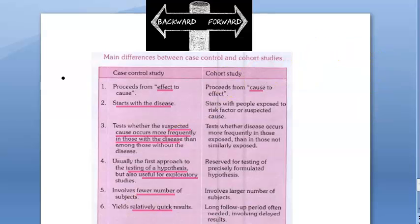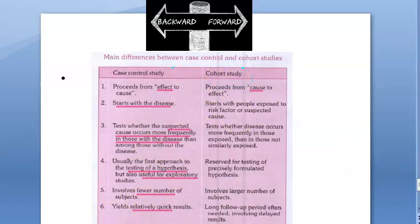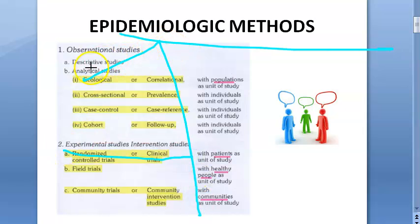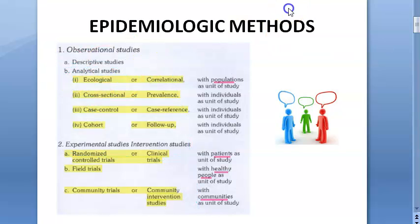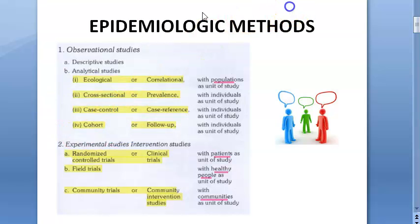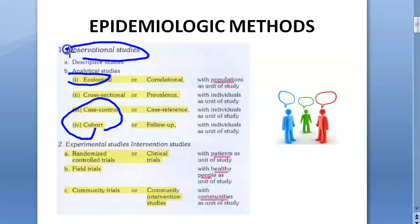In this video we want to look at the differences between a case control study and a cohort study. In epidemiological methods, we have observational studies and experimental studies. In observational studies, we have descriptive studies and analytical studies. In analytical studies, we have case control studies and cohort studies — both are analytical studies under observational study under epidemiologic method.